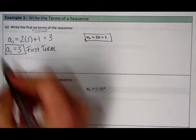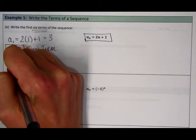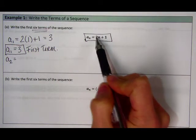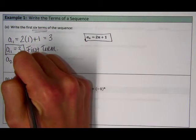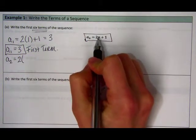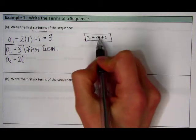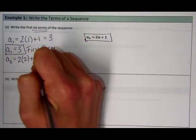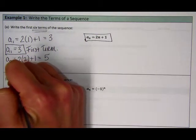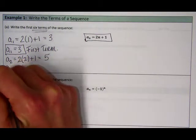So my next term, my second term, is going to be represented as a sub 2. I'm going to go back to my equation. I'm going to plug 2 into my equation. So I get 2, my n, my sub n here represents the n I'm plugging in here. So my 2, I plug in where my n is, plus 1. So it gives me 4 plus 1, which gives me 5. So I know my second term, a sub 2, is 5.